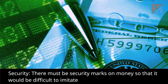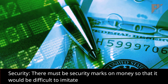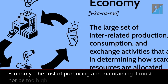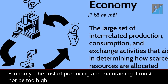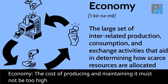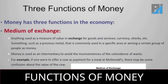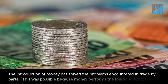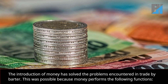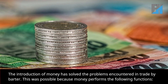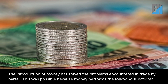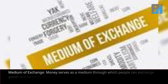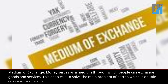Security: there must be security marks on money so that it would be difficult to imitate. Economy: the cost of producing and maintaining it must not be too high. Functions of money — the introduction of money has solved the problems encountered in trade by barter. This was possible because money performs the following functions.